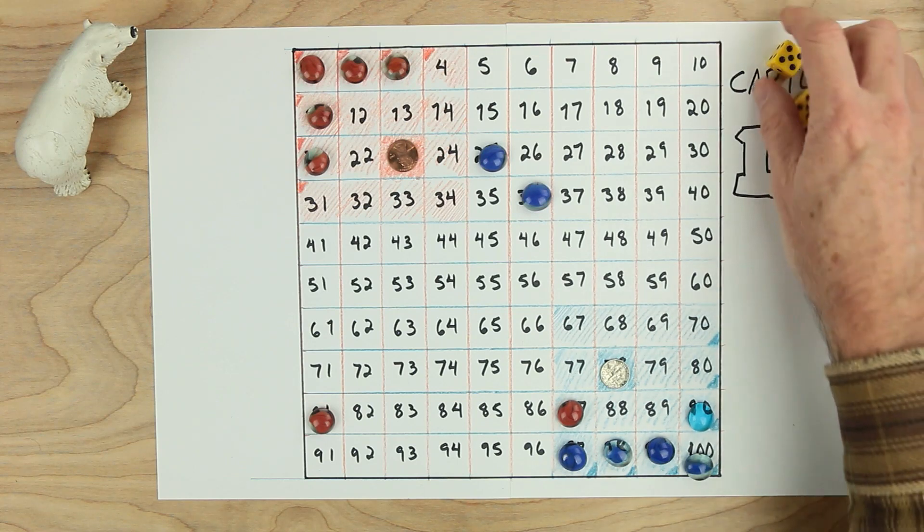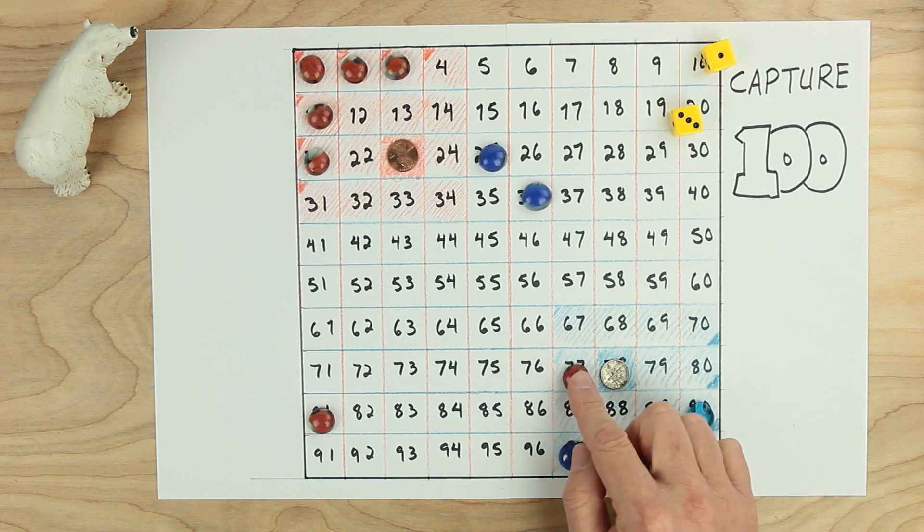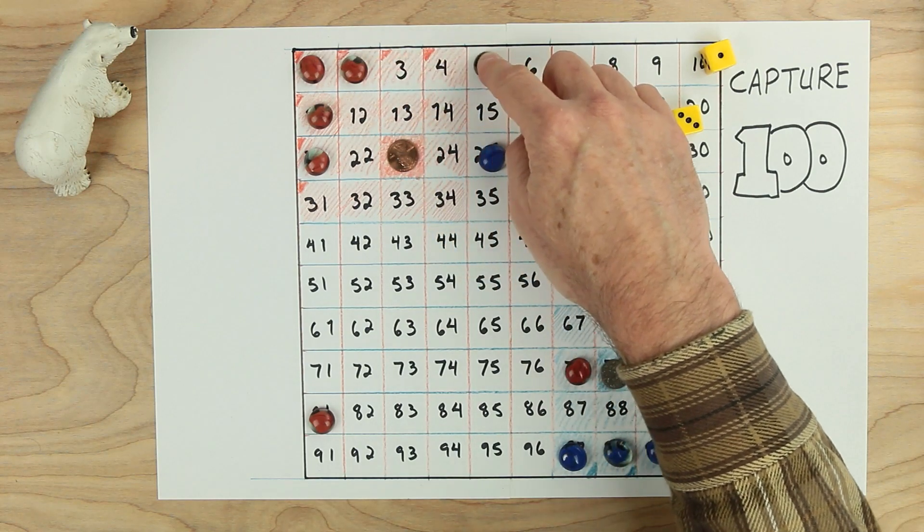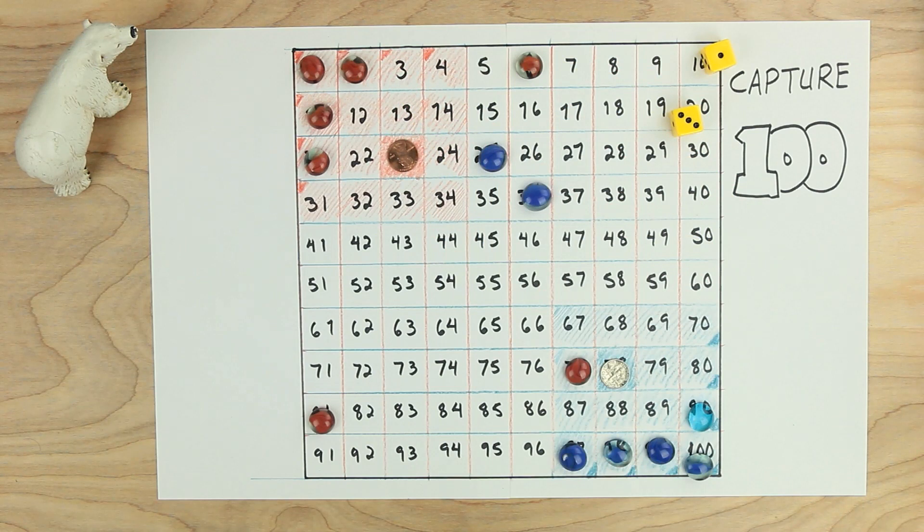Red's turn. Red rolls. Red rolls a three and a one. Red likes the one and then the three. Red's thinking one, two, three, adding three, so the possibility of taking out one of these pieces.